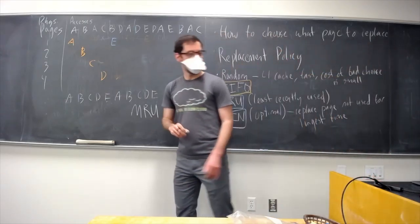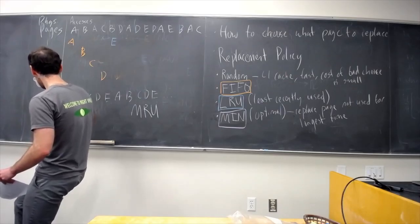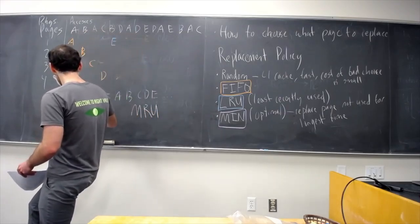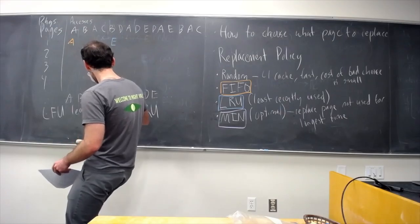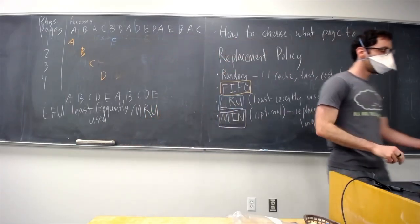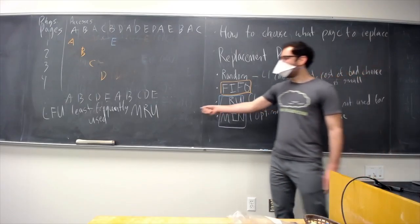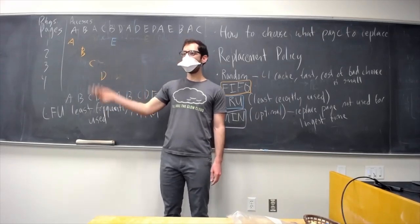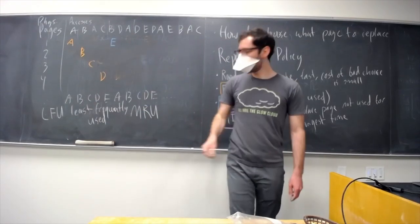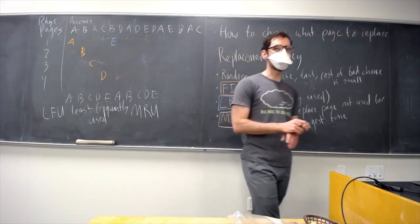The other policy that sometimes comes up is Least Frequently Used. Instead of going by recency the way LRU does, Least Frequently Used relies on information about how often certain pages or cache entries are used — whichever one is used very rarely, you say that's probably a safer one to get rid of.